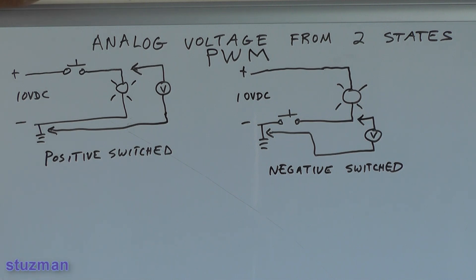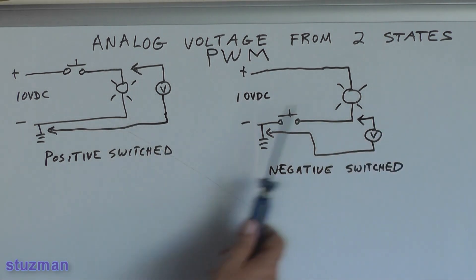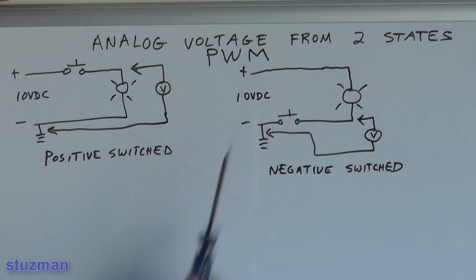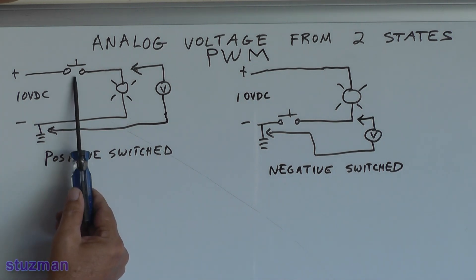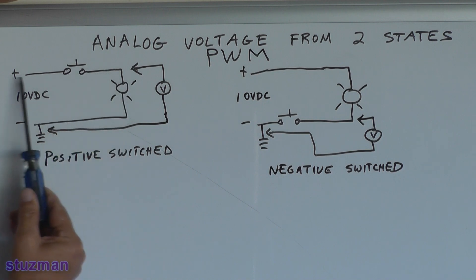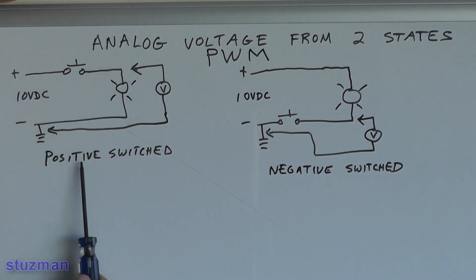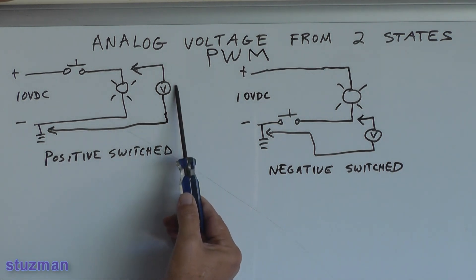There are two different ways that you can switch the supply volts and the ground, and you're going to get an analog voltage from these two states — and from that we're going to call that pulse width modulation. For this first circuit here, you can see that I have a push button in the positive side. So this is going to be a positive side switch circuit, and this is a light bulb over here, and over here I have a volt meter.